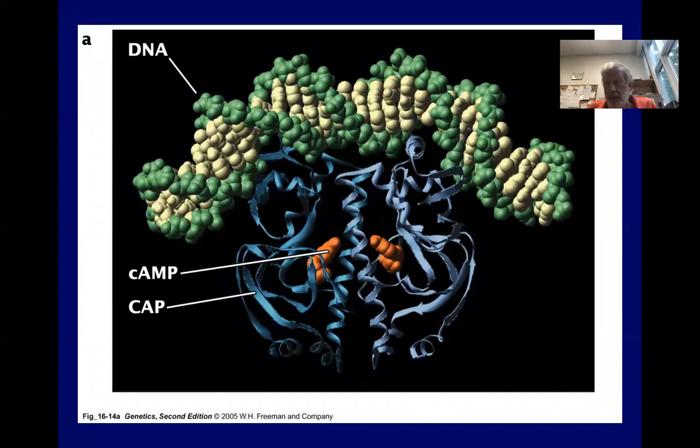This shows you DNA in the balls and then CAP protein in the blue ribbons and cAMP as the red balls. And of course the DNA bends slightly where the complex attaches to it.